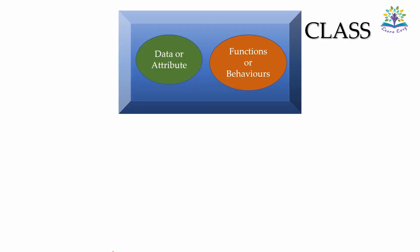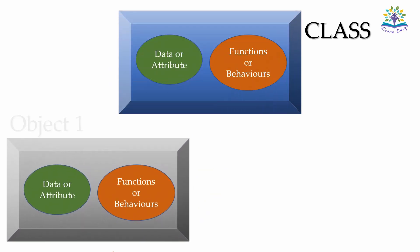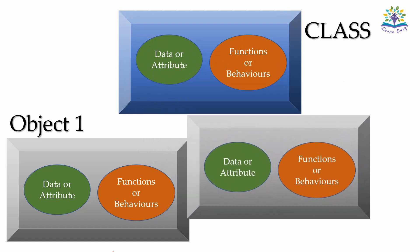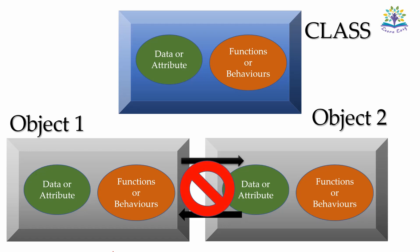Multiple instances of a class can be created. Each object receives a copy of these attributes and behaviors, but the data of one object cannot be directly accessed by another object. This is how data hiding and security of data are being realized.